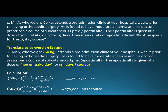So we want to see what our answer is supposed to be. Well, our answer is going to be number of units per course. So we have units per kilogram per day over here, and then we have 15 days per course, so we get rid of the day here, and we have kilograms — get rid of the kilograms — so we have number of units per course.